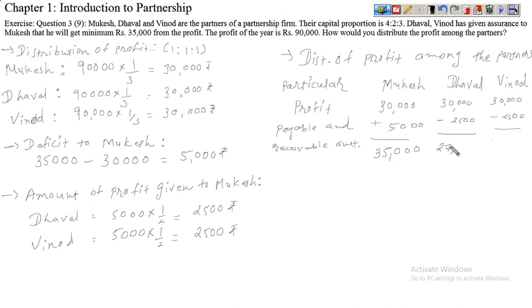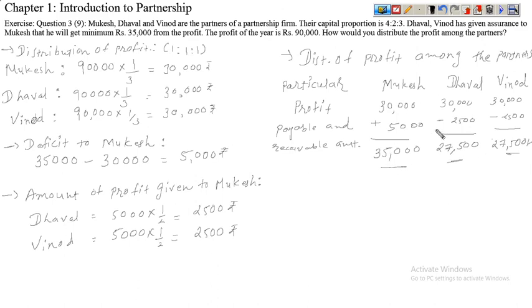Dhaval gets ₹27,500 and Vinod gets ₹27,500. So the final distribution of profit is: Mukesh receives ₹35,000, Dhaval receives ₹27,500, and Vinod receives ₹27,500.